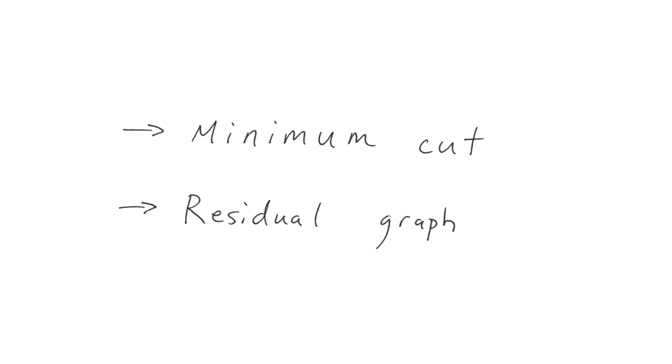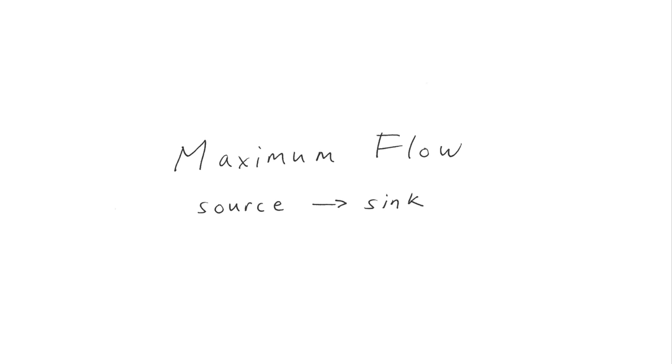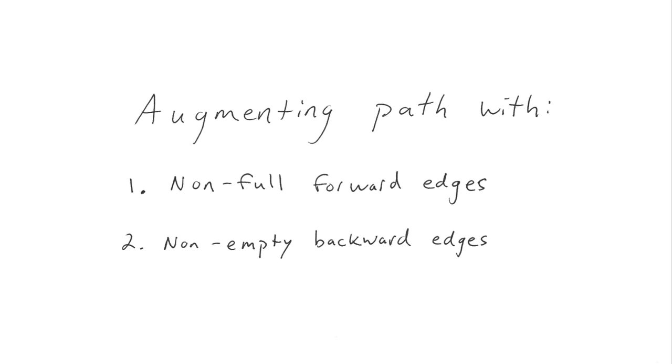Back to our problem. To reiterate, we're trying to find the maximum flow from a source node to a sink node. We'll do this by finding augmenting paths from the source to the sink. An augmenting path is simply a path whose edges are either non-full and forward, or non-empty and backward, basically a path that still has capacity for flow. You'll see exactly what I mean by this in the example.